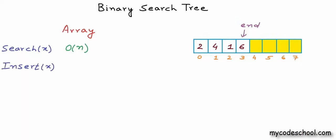We can say that the time complexity of this search operation will be O(n). Now what will be the cost of insertion? Let's say we want to insert number 5. If there is available space, we can add one more cell by incrementing the marker 'end' and fill in the integer to be added. The time taken for this operation will be constant — O(1).